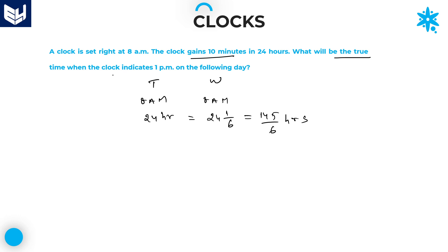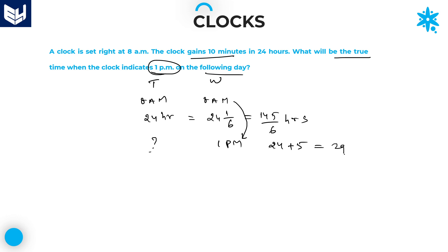The question is: what will be the true time when the clock indicates 1 PM on the following day? We are talking about the wrong time and need to find the true time. At 1 PM on the wrong clock, what is the correct time? From 8 AM to 1 PM on the following day: 8 AM to 8 AM is exactly 24 hours, plus 8 AM to 1 PM is 5 hours — total 29 hours. So 29 hours of wrong time equals how many hours of correct time?